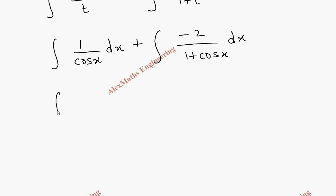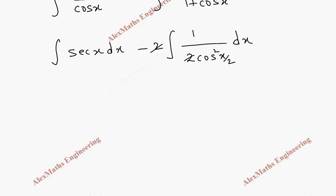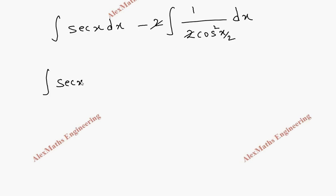Now this becomes secant x dx minus integral secant square x by 2 dx. We can cancel these two. Now again, this is secant x dx minus integral secant square x by 2 dx. The formula for secant x is log mod secant x plus tan x.